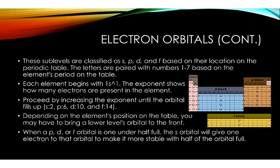Each element begins with 1s¹. The exponent shows how many electrons are present in the element. So hydrogen would begin with 1s¹ because it's in the first period and it contains only one electron.